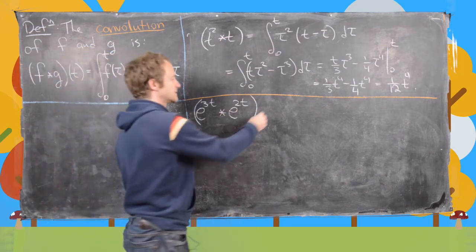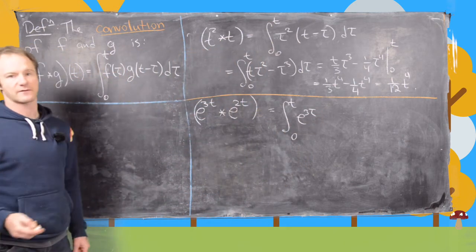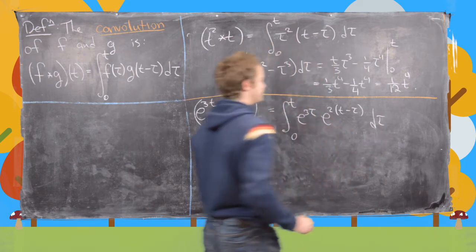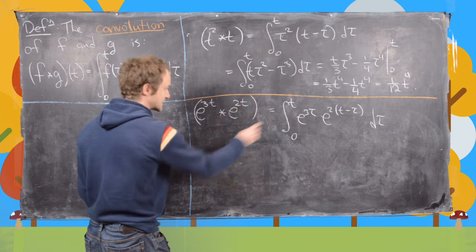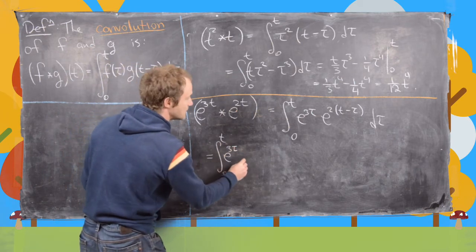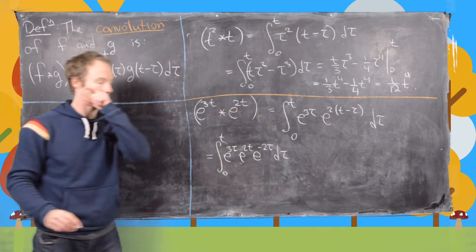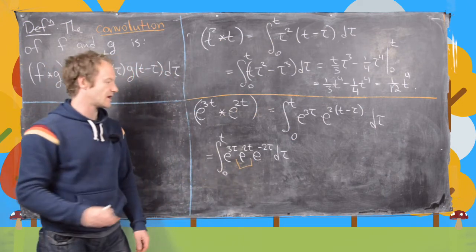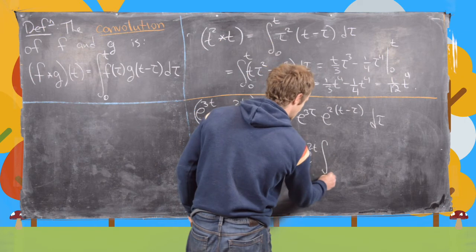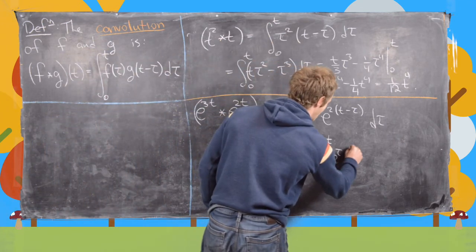Now let's look at the exponential example: e^(3t)★e^(2t). This gives the integral from 0 to t of e^(3τ) · e^(2(t−τ)) dτ. We can split the second exponential to get the integral from 0 to t of e^(3τ) · e^(2t) · e^(−2τ) dτ. Since e^(2t) is constant with respect to the integral, we pull it out, leaving e^(2t) times the integral from 0 to t of e^(3τ − 2τ) dτ, which is e^(2t) times the integral from 0 to t of e^τ dτ.